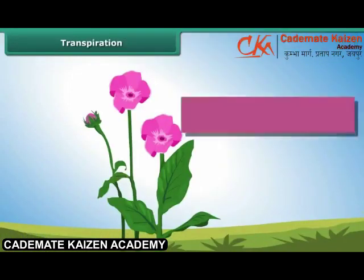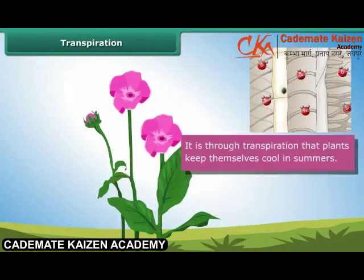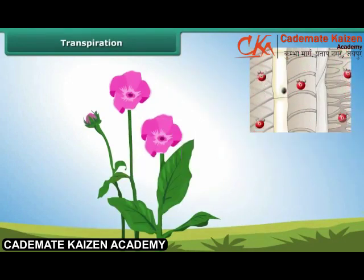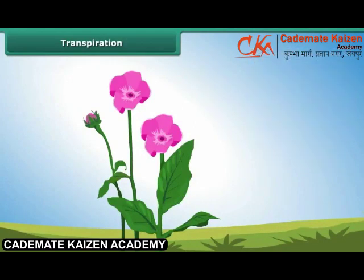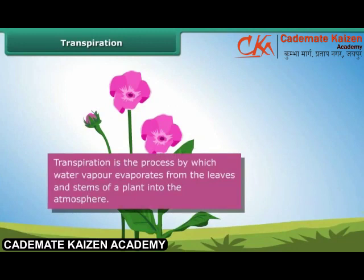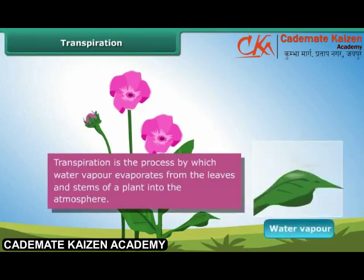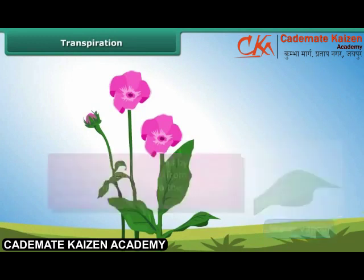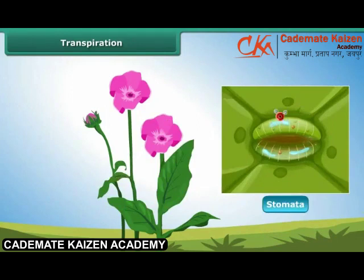An important function of the leaf is to keep the plant cool in summers. This is accomplished through transpiration. Transpiration is the process by which water vapor evaporates from the leaves and stems of a plant into the atmosphere. Small pores called the stomata on the underside of the leaves facilitate transpiration.